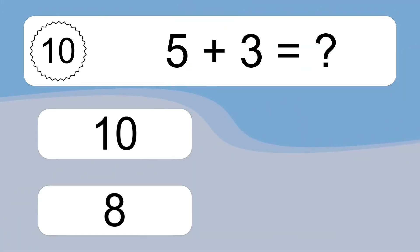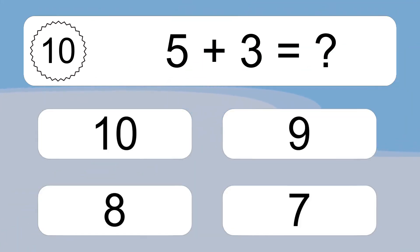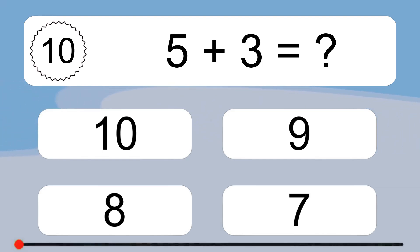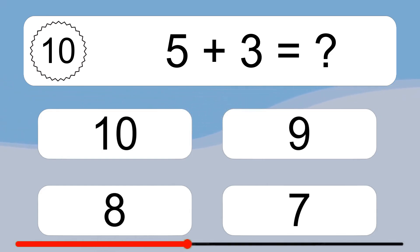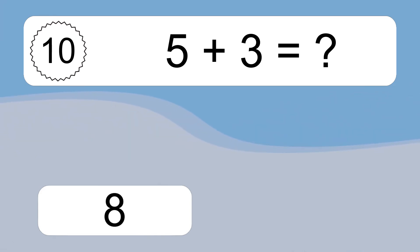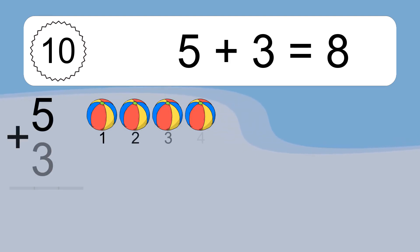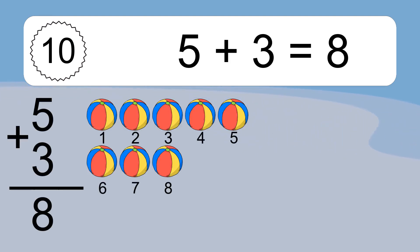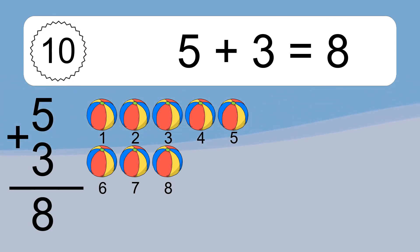5 plus 3 equals what? 5 plus 3 equals 8. Let's count it: 1, 2, 3, 4, 5, 6, 7, 8.